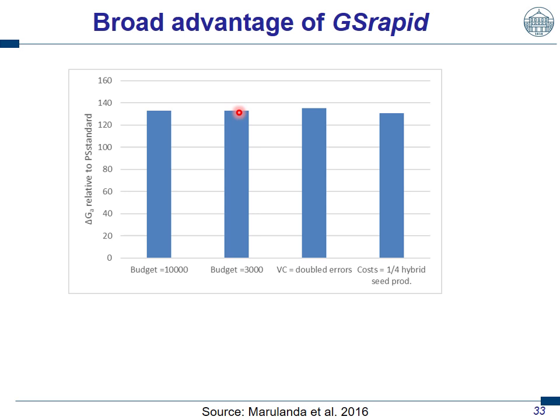We did this for a high budget (10,000 units, roughly half a million euros) and for a small budget (3,000 units, roughly 150,000 euros) — we still see an advantage of over 35%. Then we doubled the error variance component, meaning much lower narrow-sense heritability — nevertheless, we get even a higher selection gain of almost 140% in the genomic breeding scheme. And when we quadrupled the hybrid seed production costs, assuming they are much cheaper, even then the GS rapid scheme achieves over 30% more annual selection gain than the phenotypic breeding scheme.